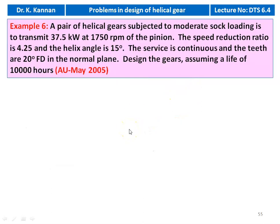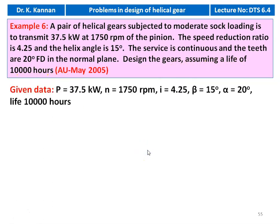Example number 6 from the May 2005 question paper: A pair of helical gears subjected to moderate shock loading has to transmit 37.5 kilowatt at 1750 rpm of the pinion. The speed reduction ratio is 4.25 and the helix angle is 15 degrees. The service is continuous and the teeth are 20 degree full depth in the normal plane. Design the gear assuming a life of 10,000 hours.